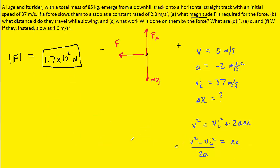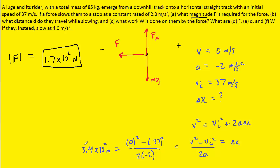We plug in the known values: 0 for the final velocity, 37 for the initial, and the acceleration which is negative. When we work that out, we get 3.4 times 10 to the power of 2 meters, since we calculated a displacement. This is the correct answer to part B.